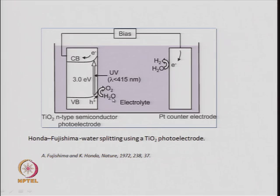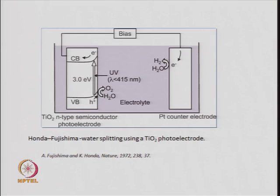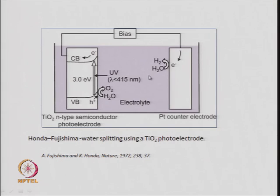Basically, two water molecules are consumed in this reaction. When you write the balanced equation: 2 H₂O gives 2 H₂ plus O₂. So you have two moles of hydrogen produced. The hole is oxidizing water to oxygen at the cathode, and the electrons are reducing protons from the aqueous solution into hydrogen at the anode.